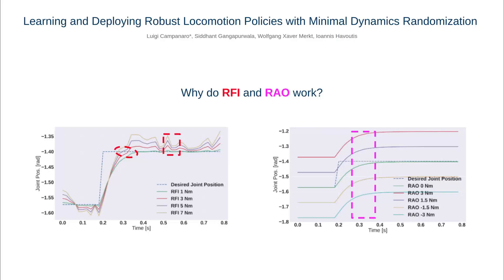Similarly, the random actuation offset shifts the desired position of the joints and implicitly models kinematics variation and payloads supported by the robot.